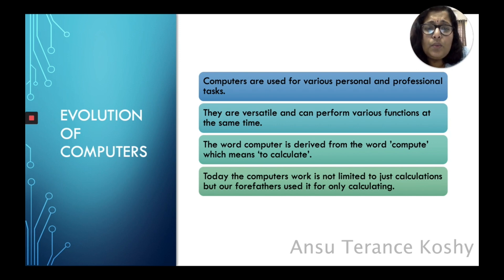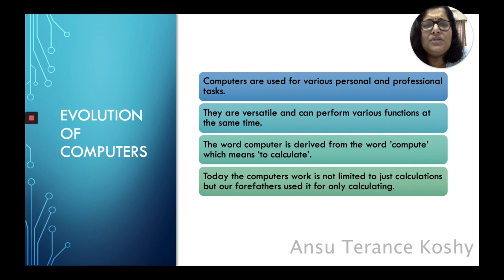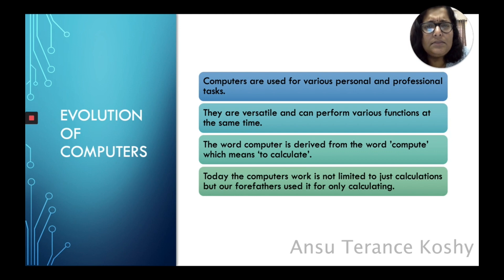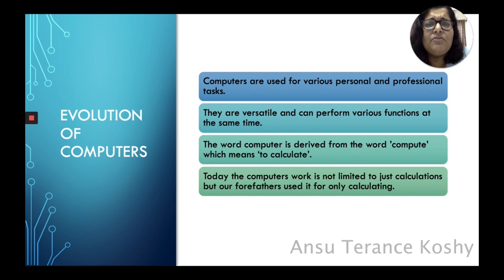Computers are versatile and can perform various functions at the same time. You can do a lot of things simultaneously because it is a fast machine. Every year it is updated into new versions and the memory capacity increases. It is a unique type of machine that does a lot of functions.